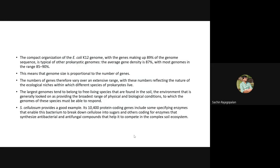The compact organization of E. coli K12 genome has genes making up 89% of the genome. The average gene density in any prokaryotic genome is 87% — the rest is junk DNA whose function we don't yet know. This means that genome size is proportional to the number of genes present because junk DNA is very low in prokaryotes. This may not be the case with eukaryotes, which have a lot more junk DNA.